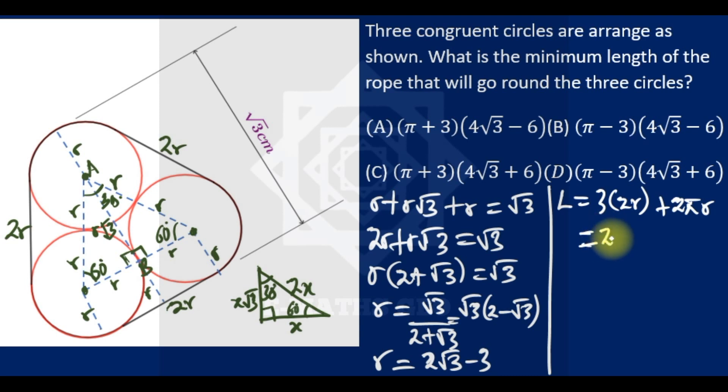If you notice, we can factor 2R. So we have 2R and we are left with 3 + π. Looking at the options, we're seeing π + 3. So let's substitute the value of R, which is 2R = 4√3 - 6, times (3 + π).